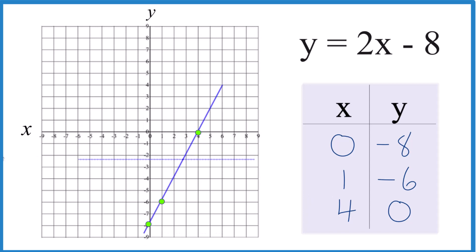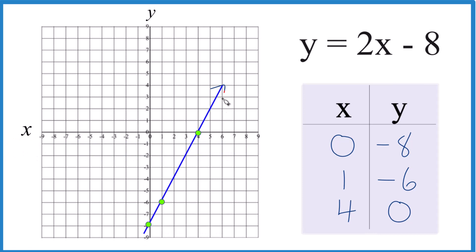Then we'll put arrows to show that this goes to infinity. That's the line for y equals 2x minus 8. So let's do slope-intercept form.